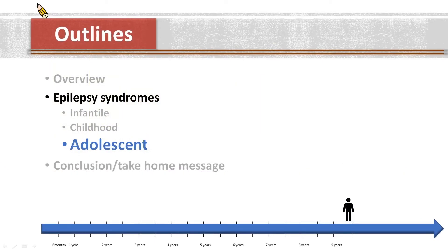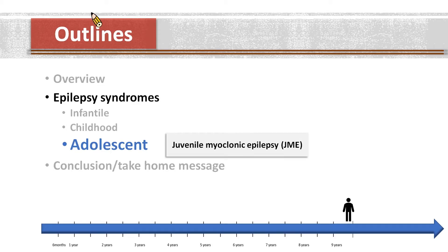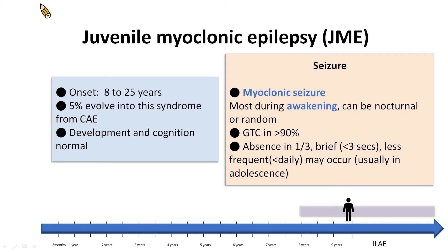Moving on to epilepsy syndromes with adolescent onset, I'll show one example: Juvenile Myoclonic Epilepsy. JME is one of the most common idiopathic generalized epilepsies. It is characterized by myoclonic seizures and generalized tonic-clonic seizures with onset between 8 to 25 years of age. A small number of cases evolve from childhood absence epilepsy. Development and cognition are typically normal.